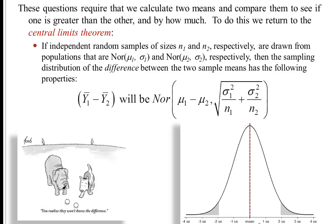The two different populations in the example I'm going to show you are going to be a population of men and a population of women. So we reach into our population of men, pull out a sample, calculate average income; then reach into our population of women, pull out a sample, calculate average income, and then calculate the difference of those two incomes.